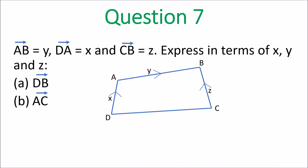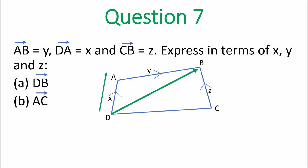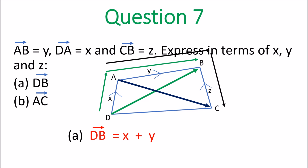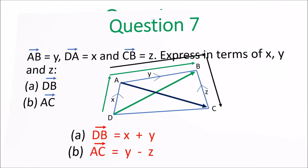Question 7, vectors. To find vector DB: you go from the tail to the head, so that's x and y both going in the same direction, so vector DB equals x plus y. For vector AC: going from A to C, that's positive y in that direction, then along BC but BC is going in the opposite direction, so it would be negative z. Vector AC equals y minus z.